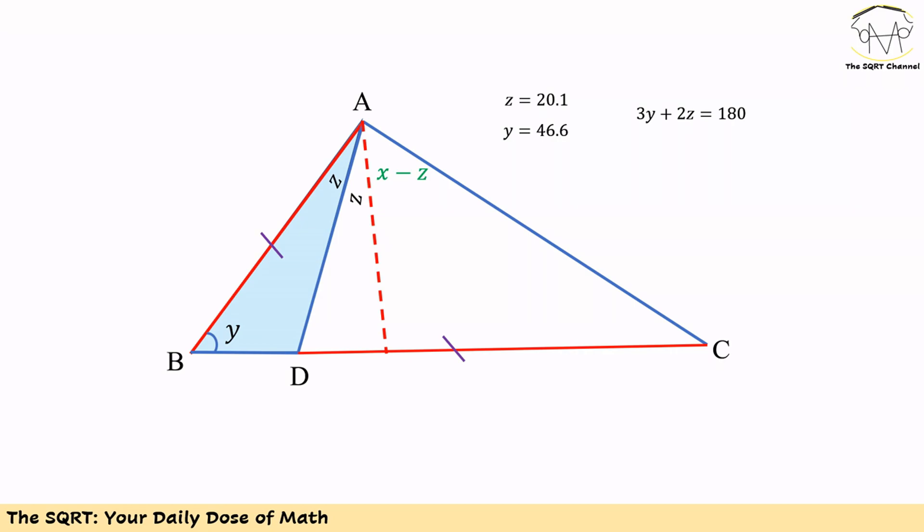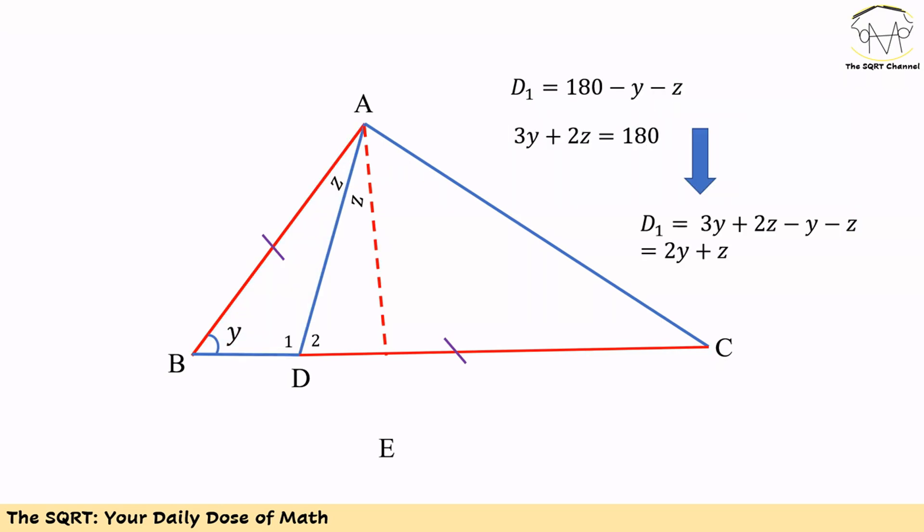You can verify that 3Y plus 2Z is equal to 180 degrees. So if you multiply Y by 3 and add 2 times Z, you get 180 degrees. With that, let's start adding a few lines.